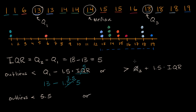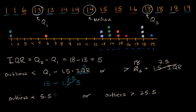Or on the upper end, Q3 is 18, and 18 plus 7.5 is 25.5. So outliers are greater than 25.5. Based on this numerical definition, we only have two outliers — only these two ones are less than 5.5. The six just happened to make it in. And we don't have any outliers on the high side.